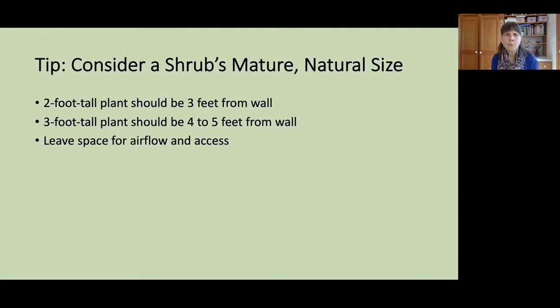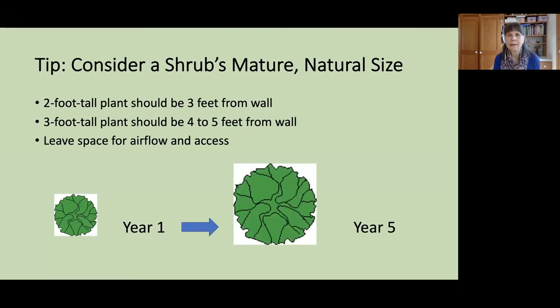Our dioecious species — the Inkberry and Winterberry hollies — have separate male and female plants, so it's necessary to have both in fairly close proximity for the female plant to bear fruit. You'll want to look for paired cultivars that bloom at the same time, and a single male plant can service up to 10 female plants. For winterberry, you would look for Ilex verticillata Red Sprite as your female plant and Jim Dandy as the male. As with the trees, you'll want to consider a shrub's mature natural size — in year one a plant will look one way, but by year five it can be considerably larger, so you want to leave space for airflow and access to the foundation of your home.